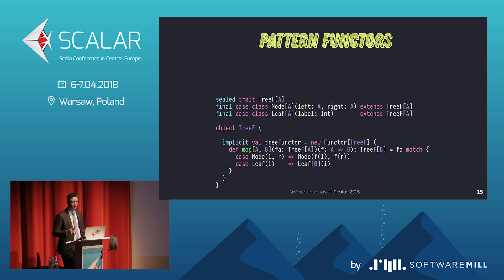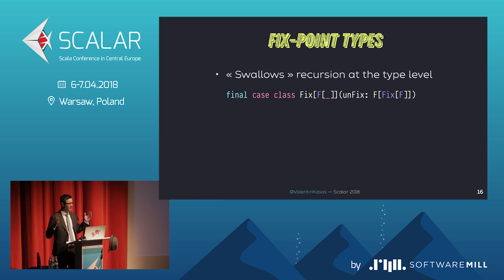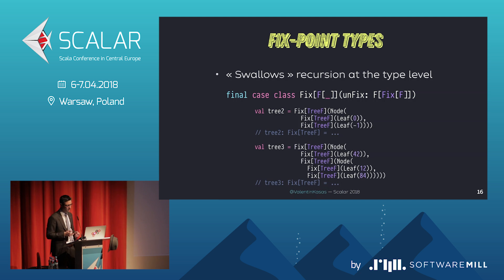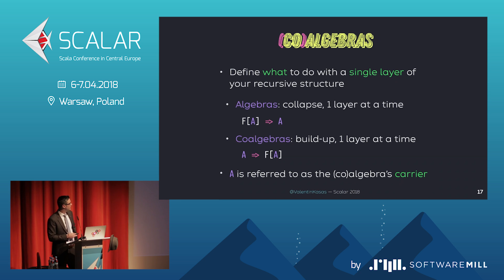The problem now is that you've lost the ability to speak about trees with a single type, because a tree of depth two will have type Tree of something, a tree of depth one will have type Tree of something, and so on. That's where you need a fixed point type that cuts the recursion and allows you to talk about trees by saying Fix of TreeF. You wrap each layer of Tree in a Fix and then you get back a single homogeneous type. The important part are algebras and co-algebras — they are the recipe of what you want to do with the elements of your structure.